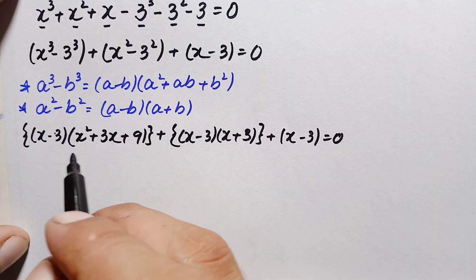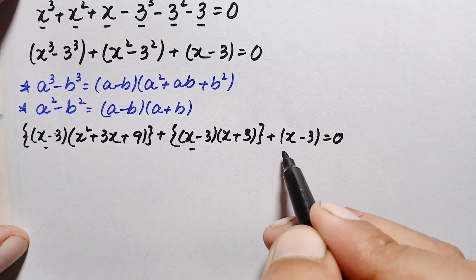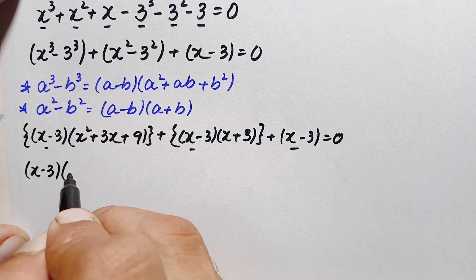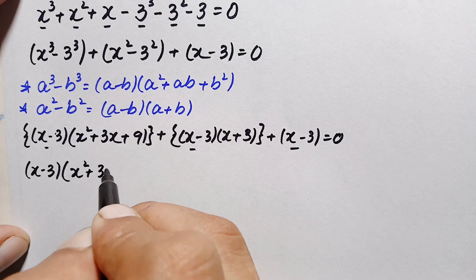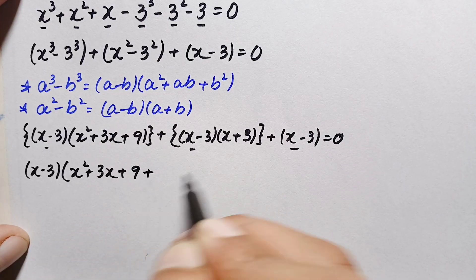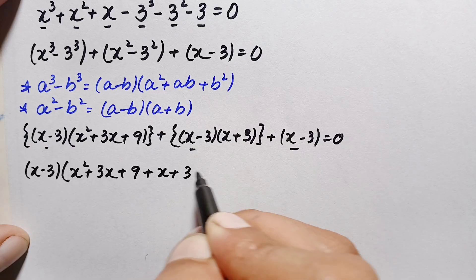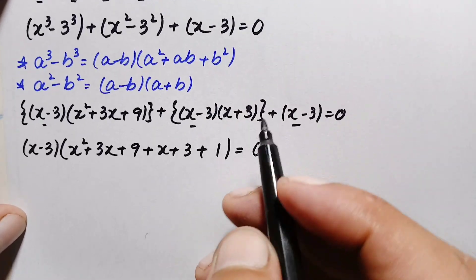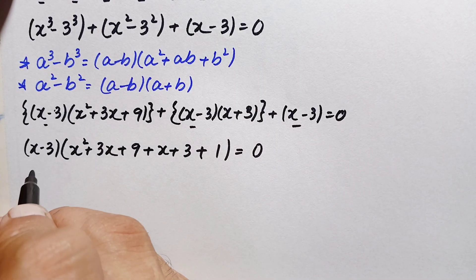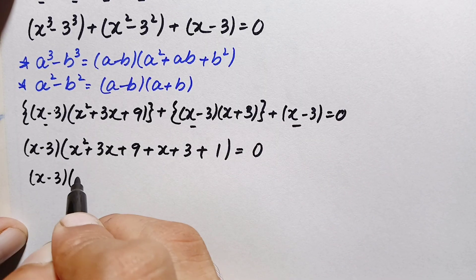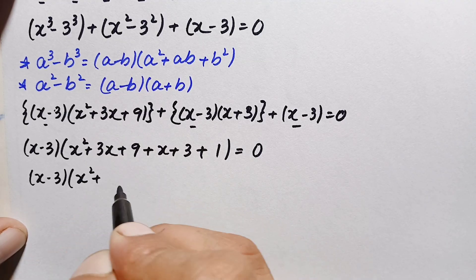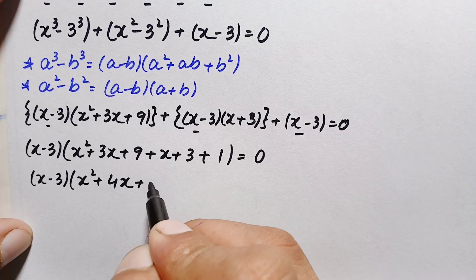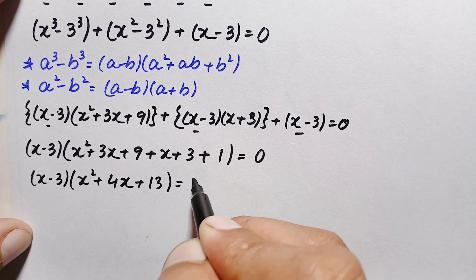Looking at the left-hand side, (x minus 3) is common to every term, so we factor it out. This gives (x minus 3) times (x squared plus 3x plus 9 plus x plus 3 plus 1) equal to 0. Simplifying inside the bracket: 3x plus x is 4x, and 9 plus 3 plus 1 is 13, giving (x minus 3)(x squared plus 4x plus 13) equals 0.